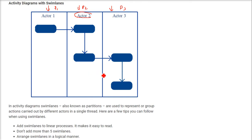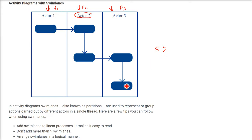Some guidelines for swim lanes: first, add swim lanes to linear processes to make them easier to read. More than five swim lanes are not generally considered a good idea. Also, arrange swim lanes in a logical manner.